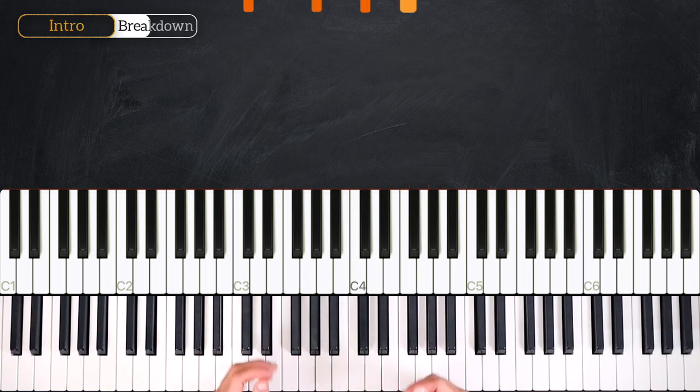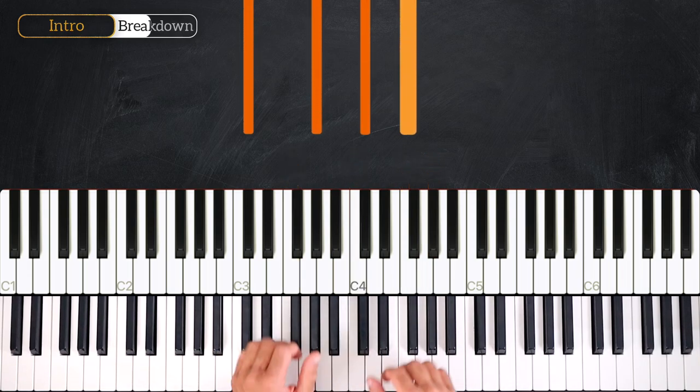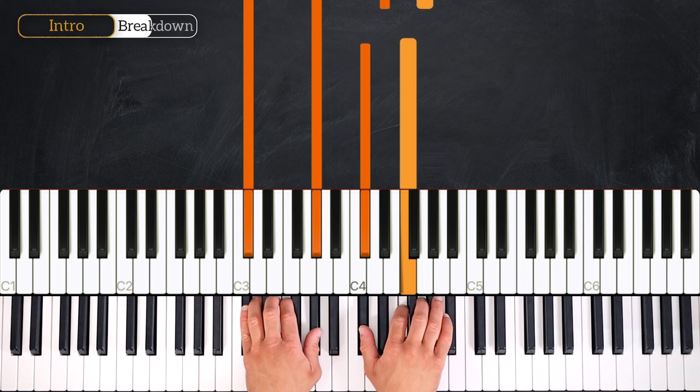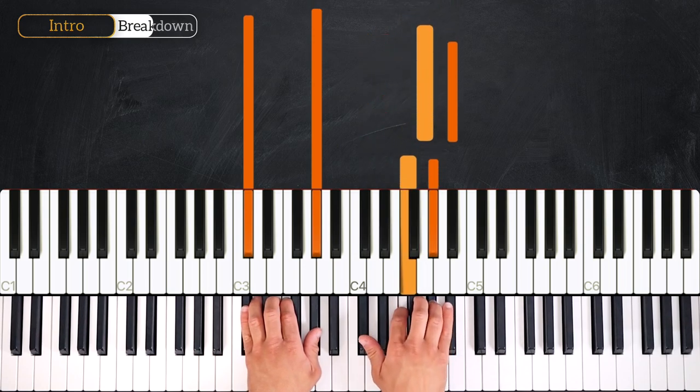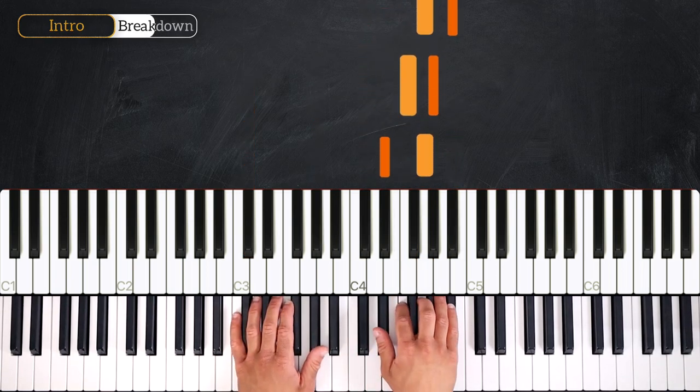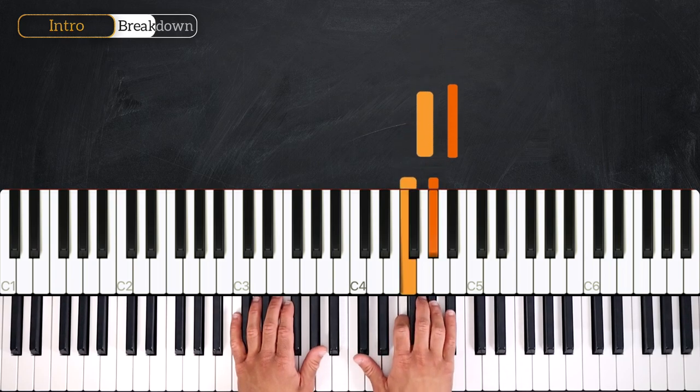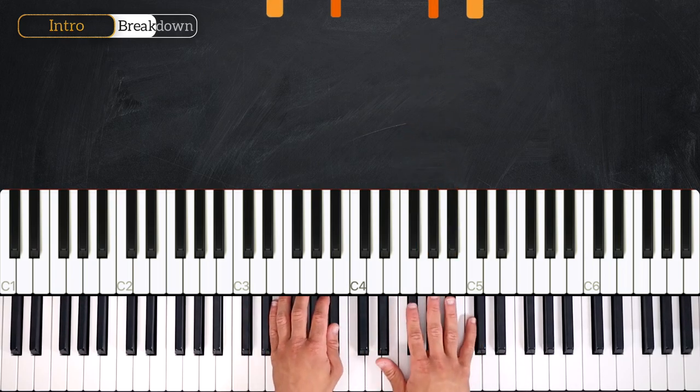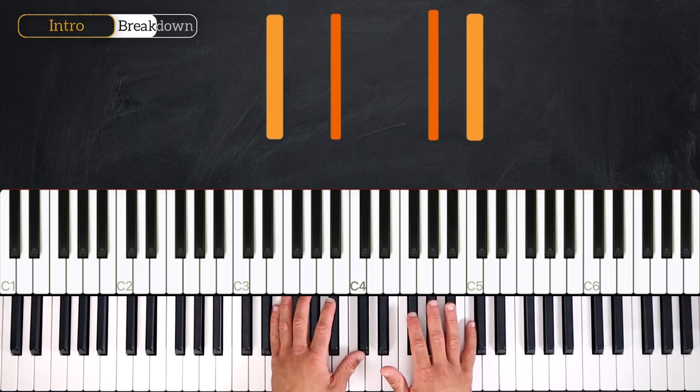Then from here we are going to play the Db major chord. Then we'll go up the scale in thirds. So we have Db, F, Eb, G, F, Ab, G, Bb, and we arrive on the C7b13.